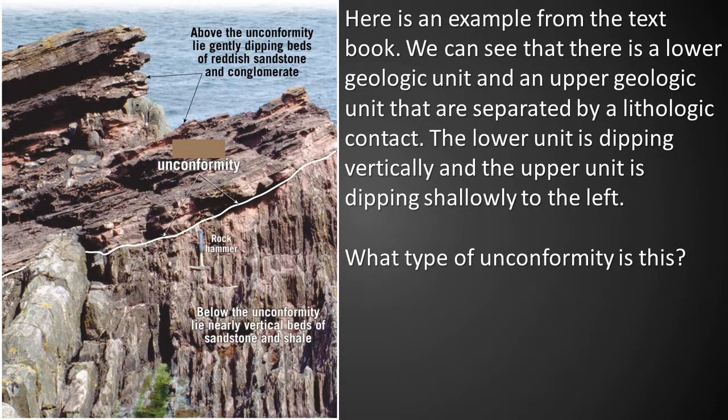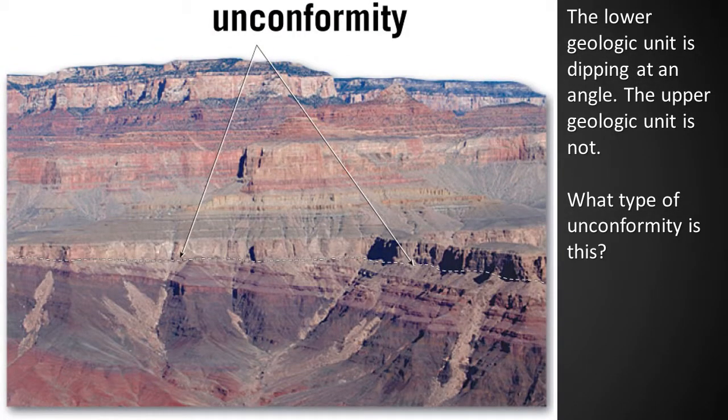Here's an example from the textbook. We can see a lower geologic unit and an upper geologic unit separated by a lithologic contact. The lower unit is dipping vertically and the upper unit is dipping shallowly to the left. What type of unconformity is this? That's right — this is an example of an angular unconformity. Here, the lower geologic unit is dipping at an angle and the upper geologic unit is not — also an example of an angular unconformity.